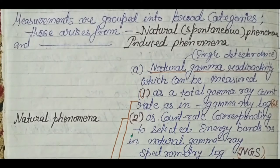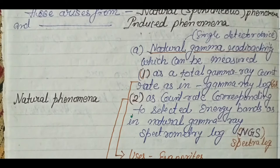In the natural gamma ray log, we are basically measuring the gamma ray radiation from the formation. It is a single detector device — only a detector is there. The total gamma ray count is measured.